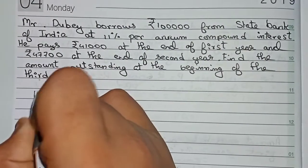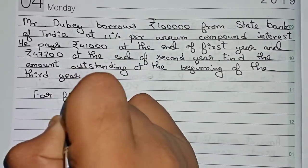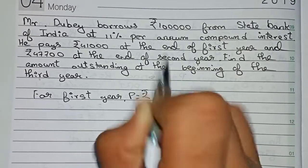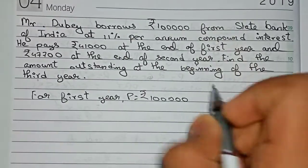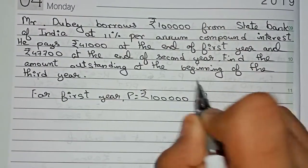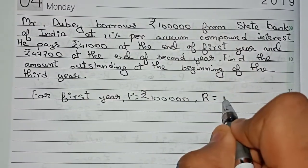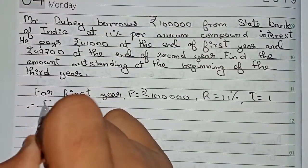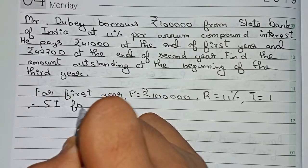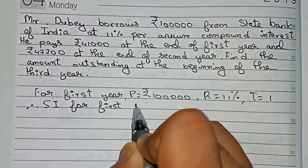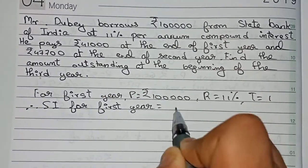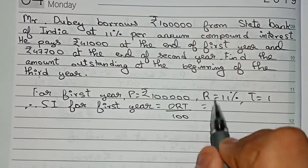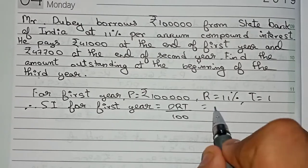Let's start. For the first year, the principal is equal to rupees 1 lakh as given. The rate is equal to 11 percent and the time is 1 year. Therefore, the SI for the first year is equal to PRT by 100. That is the formula: principal into rate into time by 100. We put in the values.